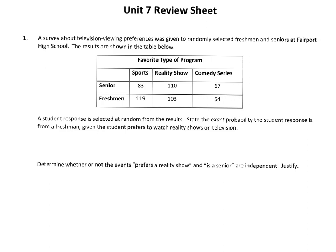In number one, I see we have a two-way table here, and I always like to total everything out because we don't have the totals here, so let's start off by doing that. The first part says a student response is selected at random from the results. State the exact probability — they emphasize exact, which means they don't want us rounding — that the student response is from a freshman given the student prefers to watch reality shows. So we're looking for freshman and reality shows.